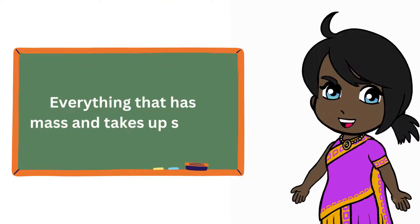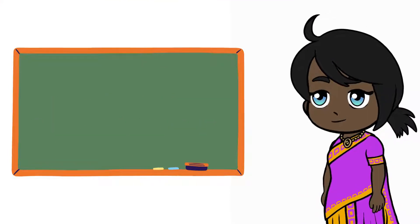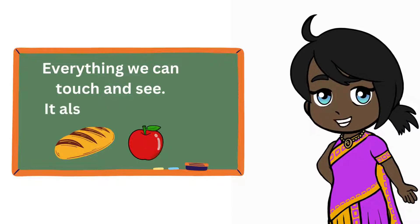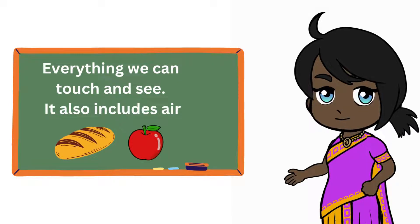Matter is everything around us that has mass and takes up space. This means that everything we can touch and see, as well as things we can't see like air, are made up of matter.